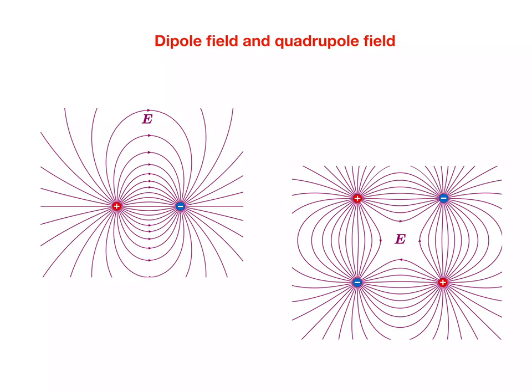By definition, electric field lines identify the path of a positively charged test charge. Therefore they always originate at a positive charge and they always end at a negative charge.